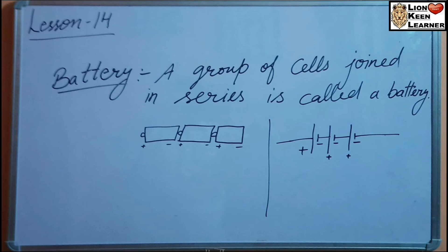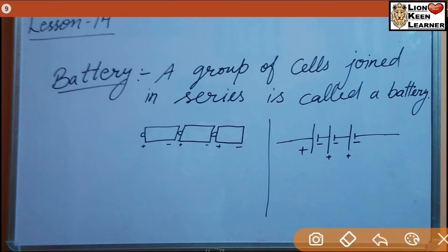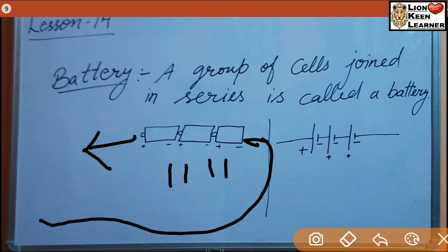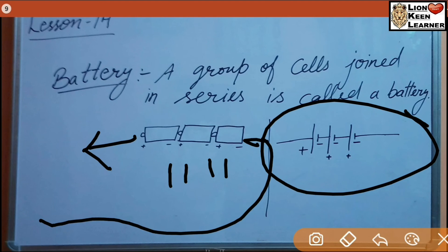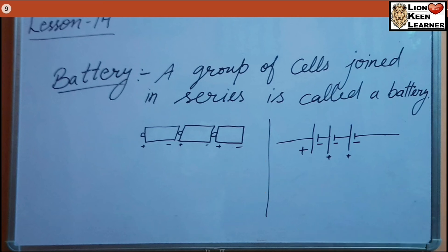A group of cells joined in series is called a battery. Means a group of cells - jaise ki teen cells ko series mein lena hota hai. This shows the positive terminal of the battery.